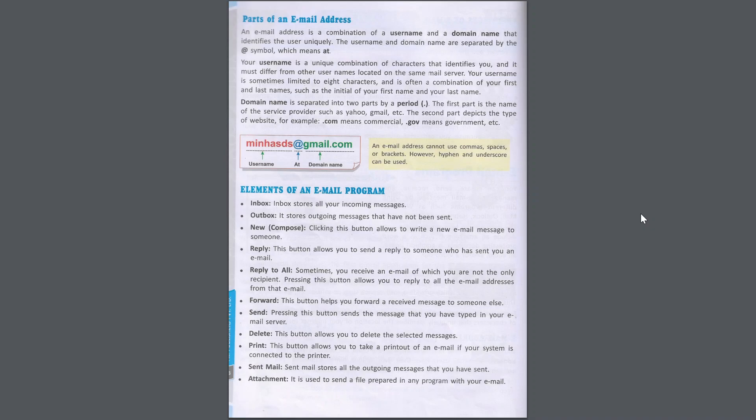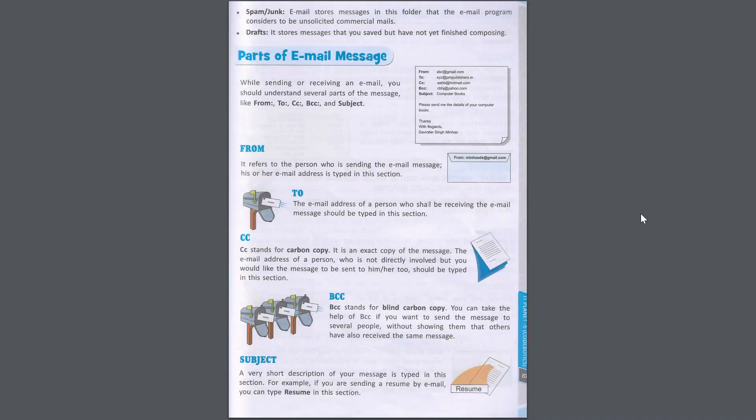Send: pressing this button sends the message that you have typed to your email server. Delete: this button allows you to delete the selected messages. Print: this button allows you to take a printout of an email if your system is connected to the printer. Sent Mail stores all the outgoing messages that you have sent. Attachment is used to send a file prepared in any program with your email. Spam or Junk stores messages that the email program considers to be unsolicited commercial mails. Drafts stores messages that you have saved but have not yet finished composing.